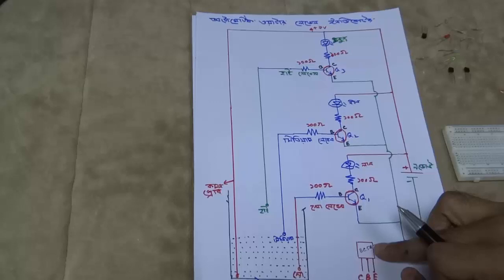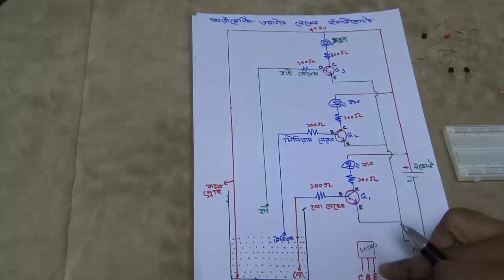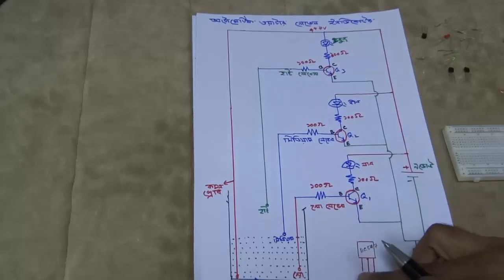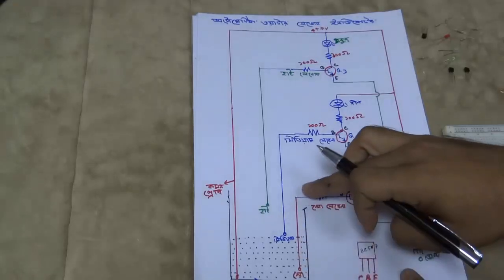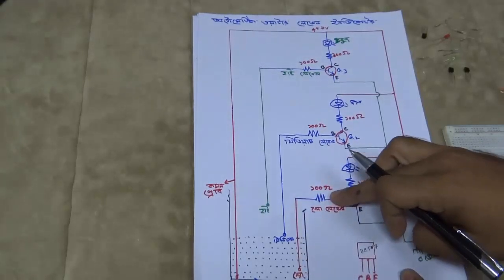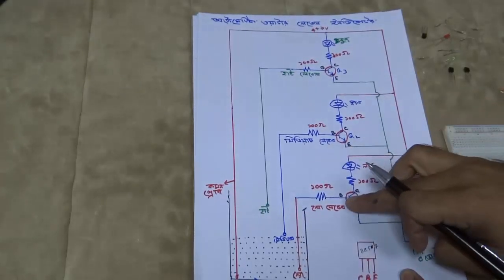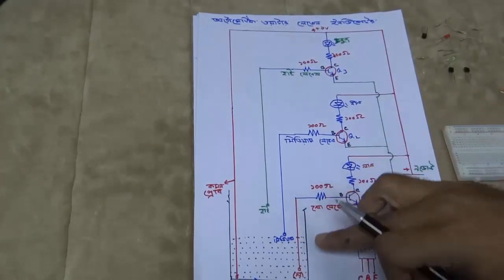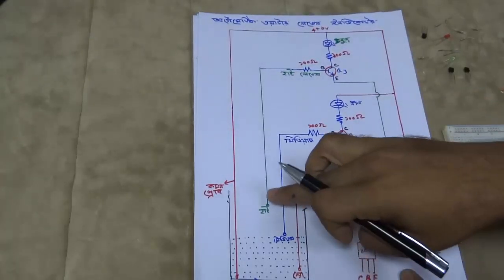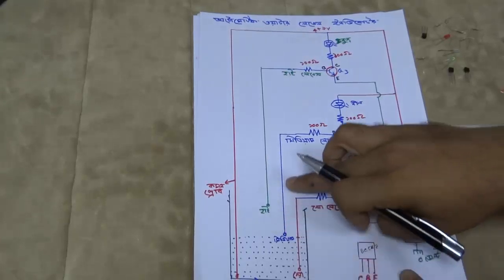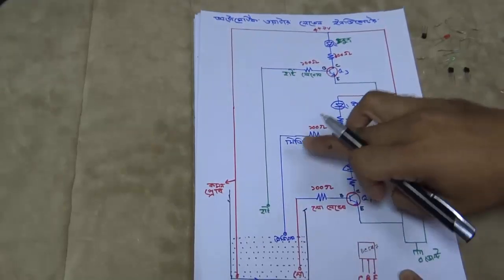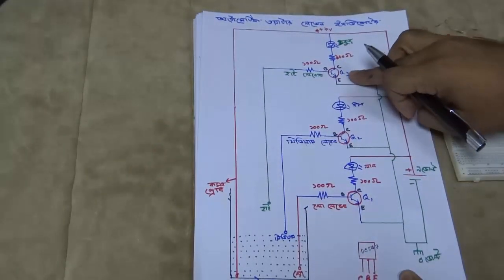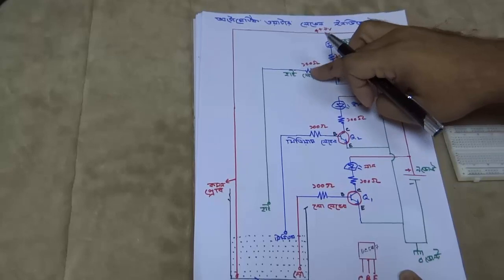The BC547 transistor has three pins: first is the collector, second is the base, and third is the emitter. The resistor is connected to the base. Low level connects to Q1 base, medium level to Q2 base, and high level to Q3 base.